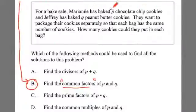In this scenario, we're not told how many chocolate chip cookies there are or how many peanut butter cookies there are. We're not told that at all. That's a key piece of information that's missing. All we know is that there's P chocolate chip cookies and Q peanut butter cookies. So when it says they want to package their cookies separately so that each bag has the same number of cookies, it's saying the same number of P chocolate chip cookies and the same number of Q peanut butter cookies.